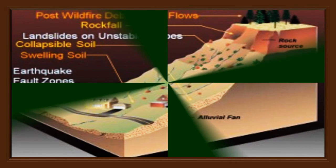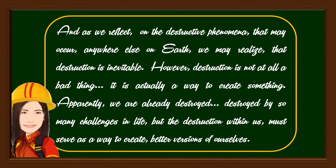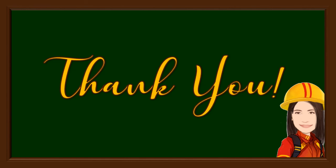Now let's revisit the question posted earlier: where do you think is the safest place to live? Perhaps some may be confused — nowhere is truly safe, and the most we can do for our own safety is to always be ready. As we reflect on the destructive phenomena that may occur anywhere on Earth, we may realize that destruction is inevitable. However, destruction is not at all a bad thing — it is actually a way to create something. We are already destroyed by so many challenges in life, but the destruction within us must serve as a way to create better versions of ourselves. Thank you to everyone, and that would be all for today's lesson. Hoping that you have gained valuable learning as a product of a meaningful realization about the Earth where we live.